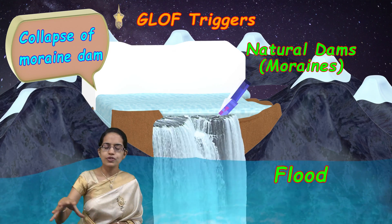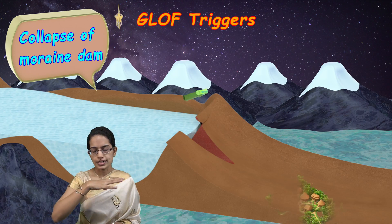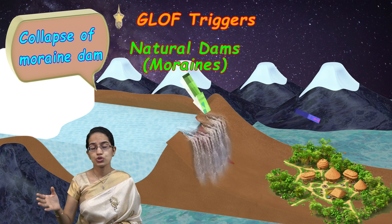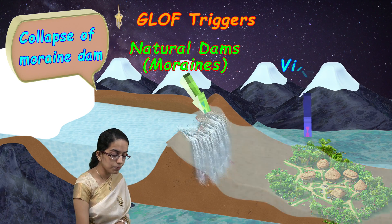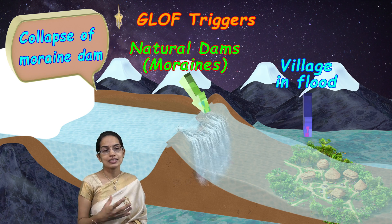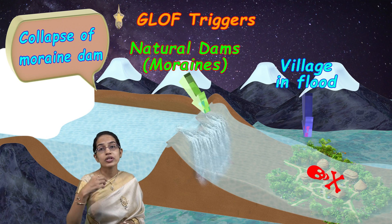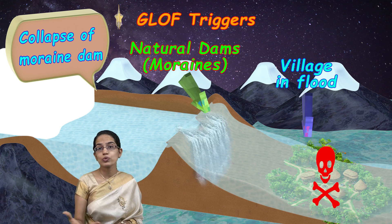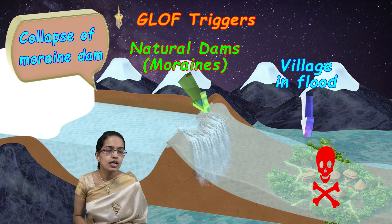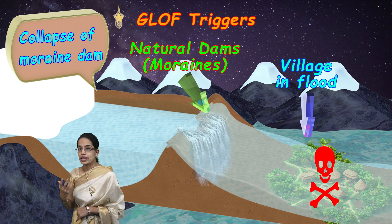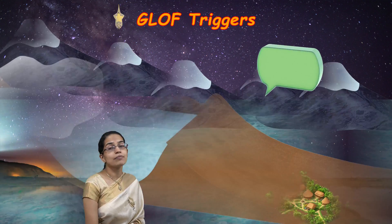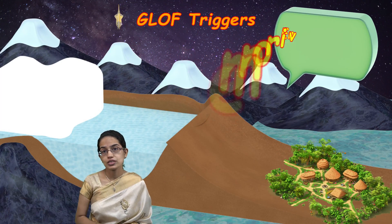When all the water being collected is suddenly washed through or piped out, that can trigger flood events. Earthquakes, as already discussed, are another significant cause for triggering GLOF.